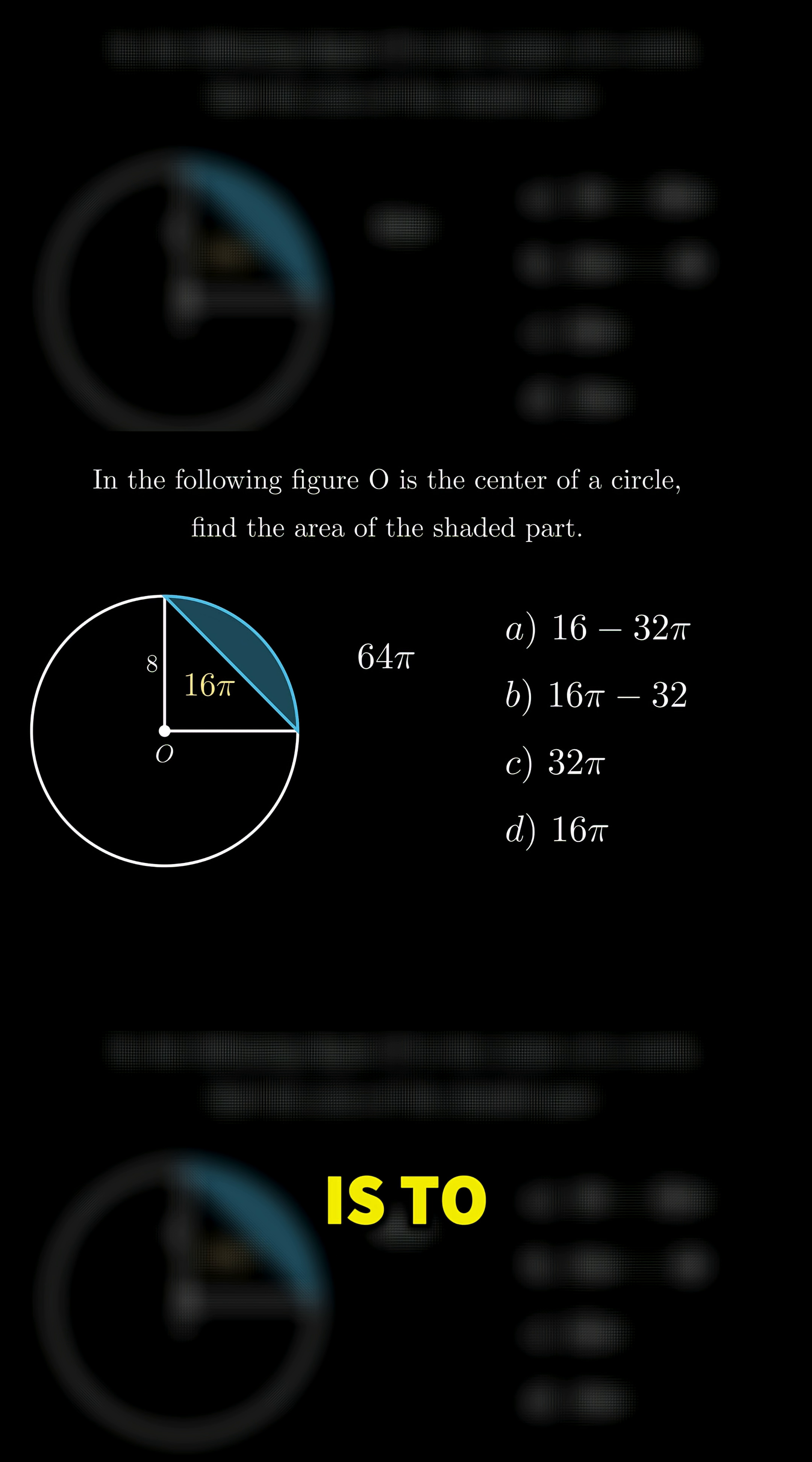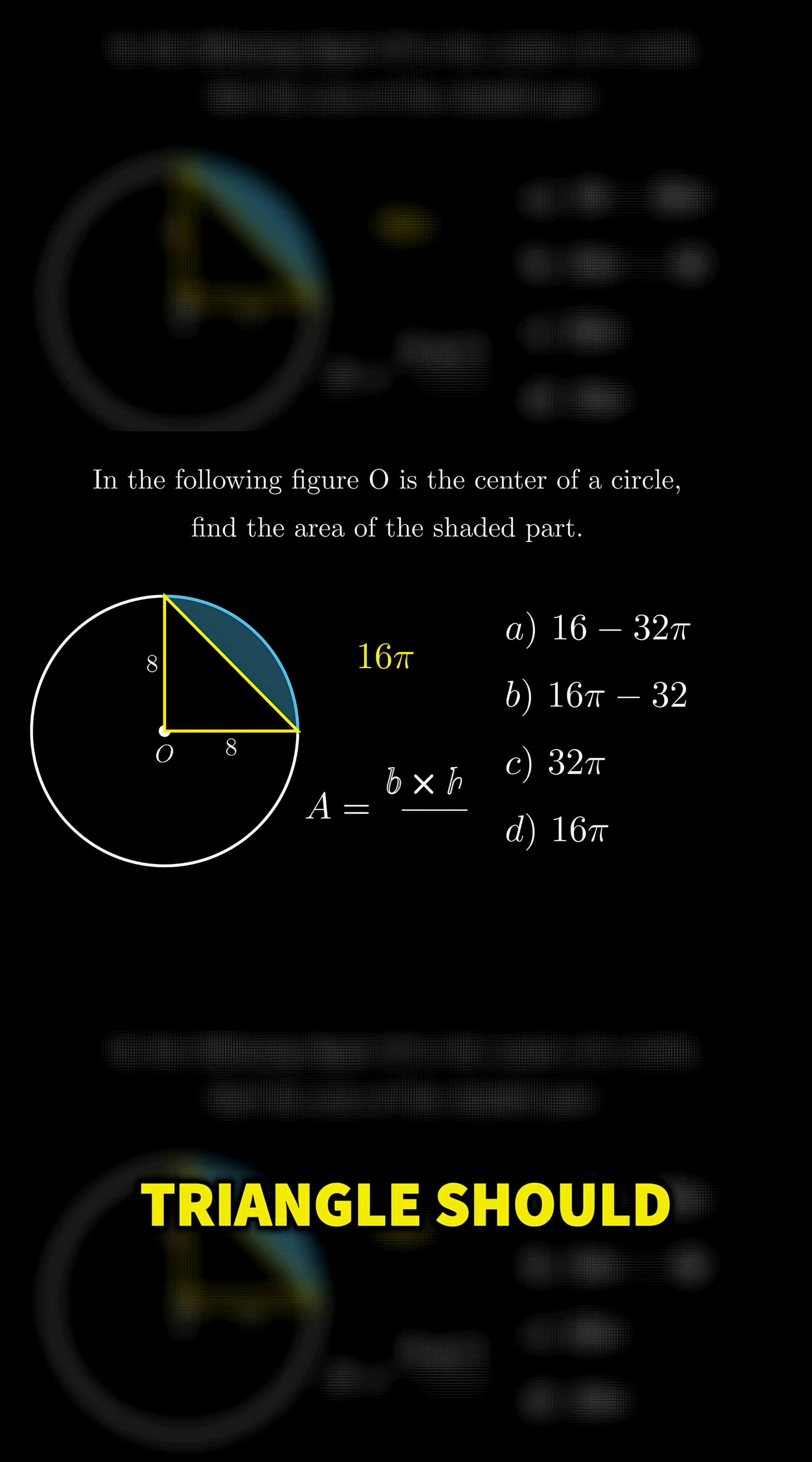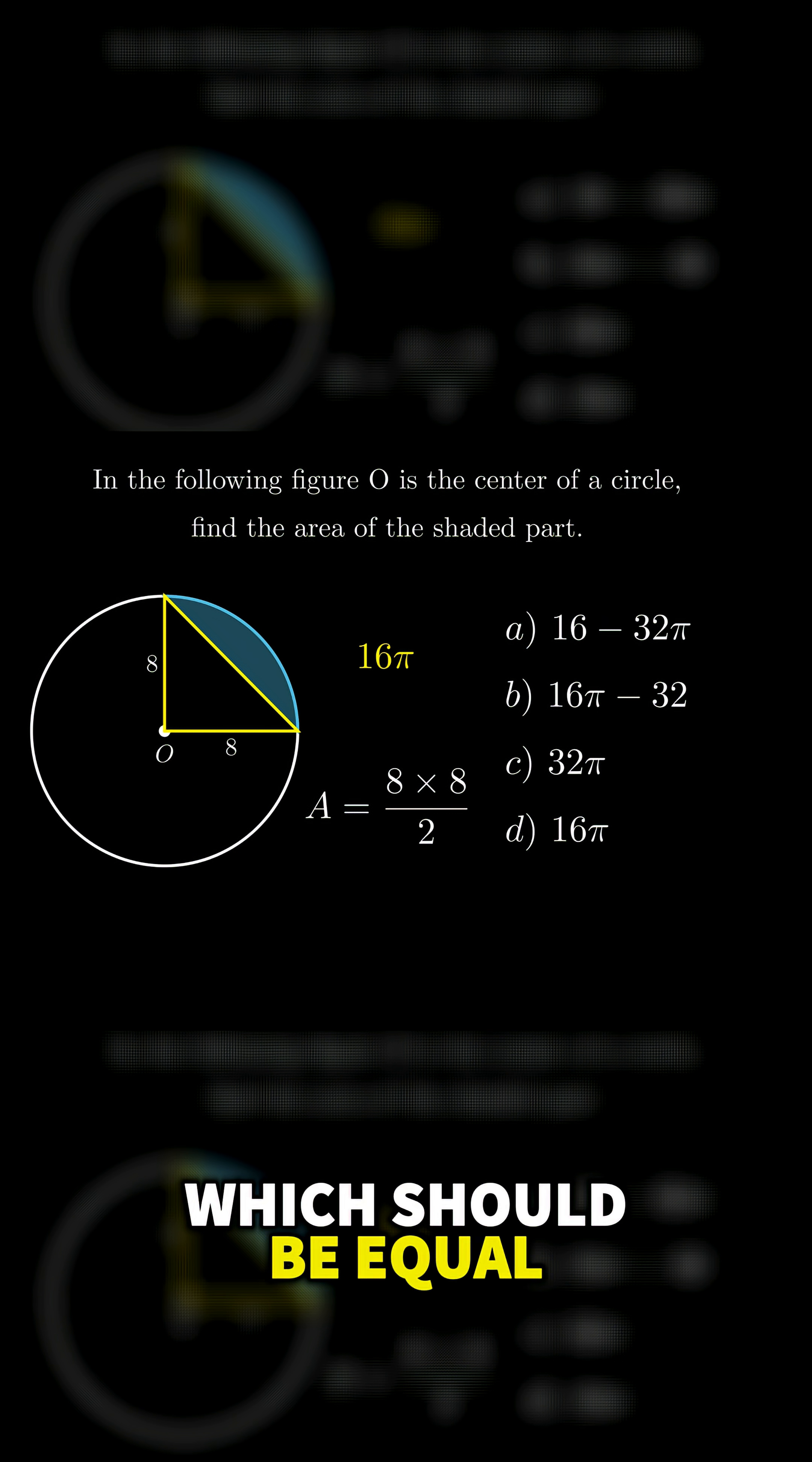Now, our next step is to find the area of the triangle inside the circle. The base and the height are both equal to the radius, which is 8. The area of the triangle should be equal to base times height over 2, which should be equal to 32.